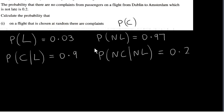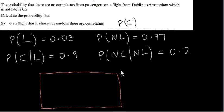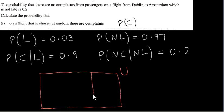To explain the ideas behind total probability, I want to look at the universal set of all flights from Dublin to Amsterdam — maybe thousands of flights or more. This is the set of all of them, called U. We can divide this set into flights that are late and flights that are not late. I will call this one L and this one NL.